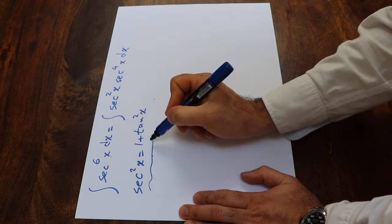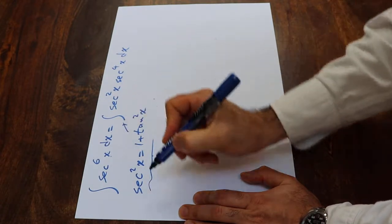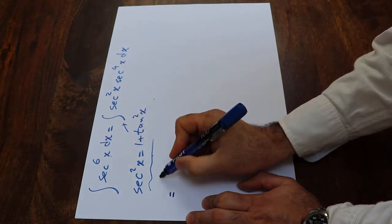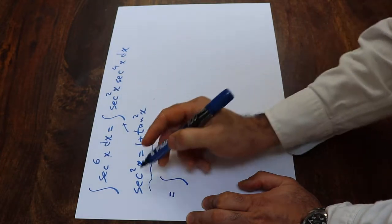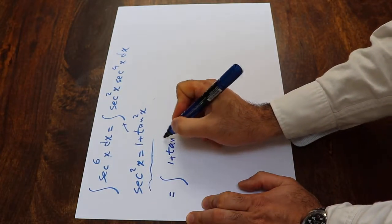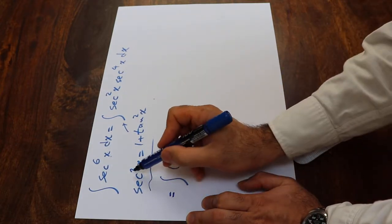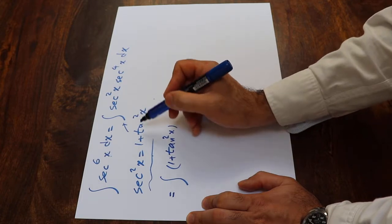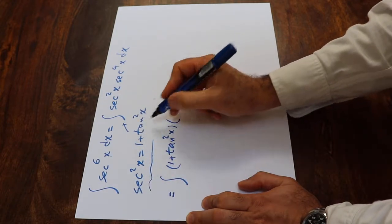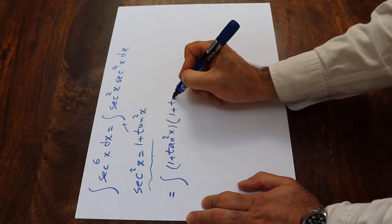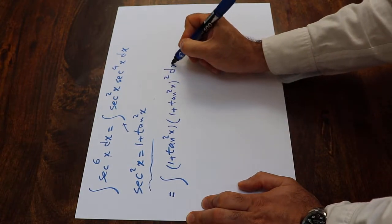If you now substitute this equation into this integral, you can rewrite this integral as, instead of sec²x, I can simply write 1 plus tan²x. And instead of sec^4x, you see here sec² is 1 plus tan². Therefore, sec^4 will be equal to (1 + tan²x)² dx.